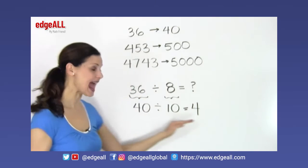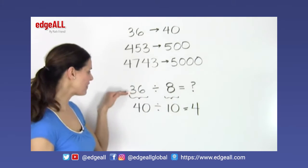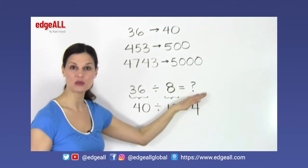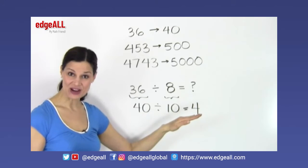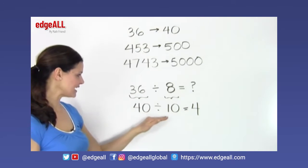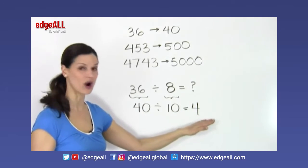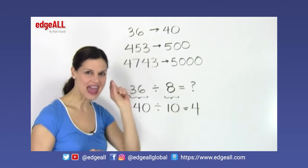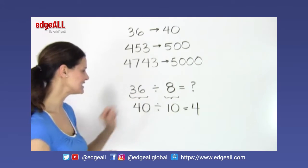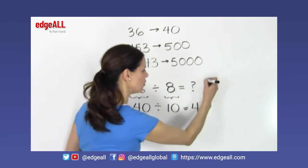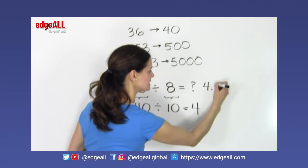And this is just an estimation of what the answer to this problem would be, and it is very close. 40 divided by 10 equals 4, which is very close to the actual answer of 36 divided by 8, which is 4.5.